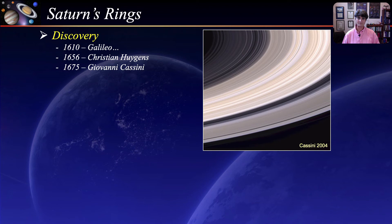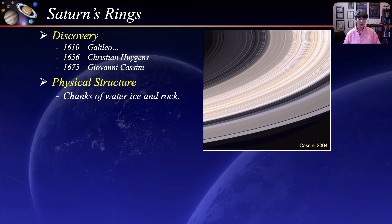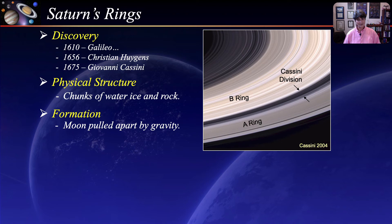The physical structure of the rings was discovered by the Voyager spacecraft in 1980. They are made of highly reflective particles, mostly water ice and some rock, ranging in size from small particles to pieces the size of a house. In this image, we can clearly see the A ring and the B ring separated by the Cassini Division. There are currently two theories on the formation of the ring system: one is that the rings were previously a moon pulled apart by gravity, or they were particles and rocks left over from Saturn's birth that never formed into a moon.